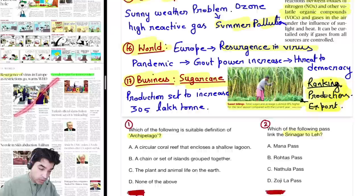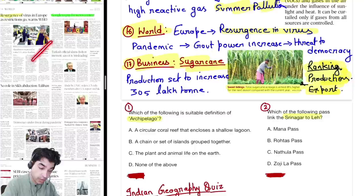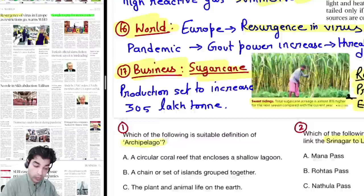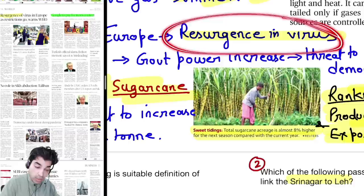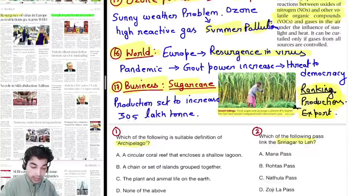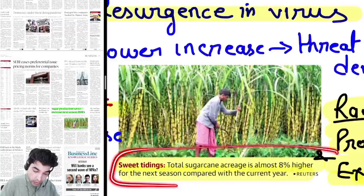World news: resurgence of virus in Europe — the virus is returning. Google has finally been required to pay for news content — we covered this in detail a couple of days back. Also, democracy is under threat during the pandemic because governments are taking extraordinary powers for themselves, which is threatening democratic rights.